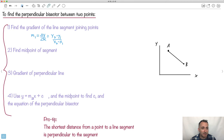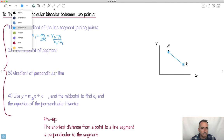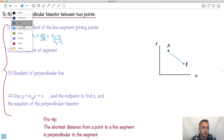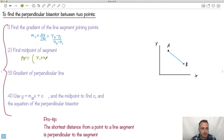We're also going to need the midpoint. The midpoint formula is X1 plus X2 over 2, comma, Y1 plus Y2 over 2 — it's the average of the X's and the average of the Y's. The order doesn't matter. This will allow you to find the midpoint, and you've also found the gradient of your line segment.